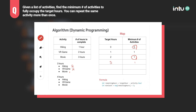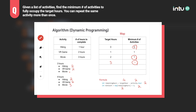Let's look at target hours equals four. Choosing hiking: target is four, activity hours is one, remaining is three. Map of three is one, plus one is two — hiking gives two. For VR game: target is four, activity hours is two, remaining is two. Map of two is one, plus one is two. Similarly for movie, it also becomes two. So for target hours equal four, the minimum is two.